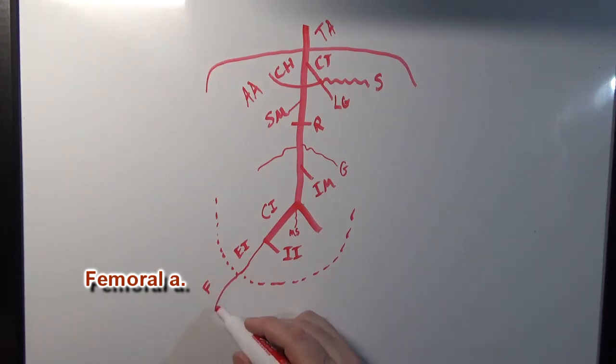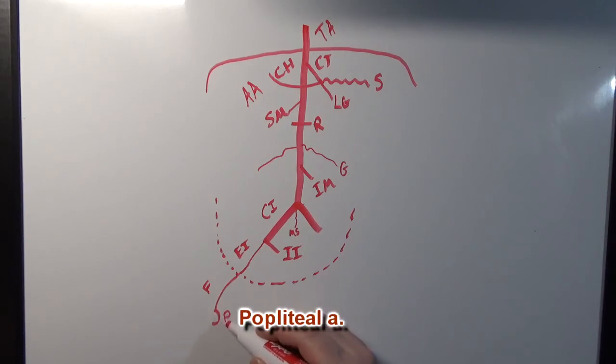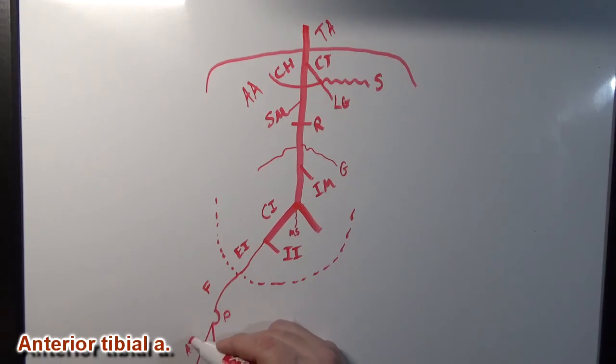Now this femoral artery right here is going to dive deep into the substance of the thigh and come around onto the back of the knee. So I draw it curved like this indicating that it's around the back of the knee right now. And the name changes once it's behind the knee to the popliteal artery. Remember popliteal means behind the knee.